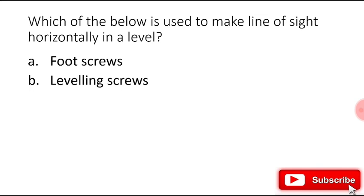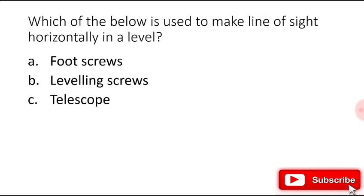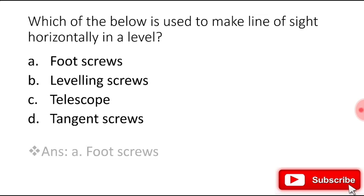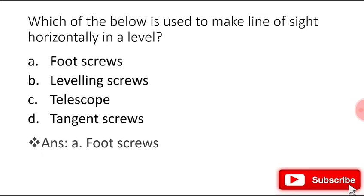Which of the below is used to make the line of sight horizontal in a level: foot screws, leveling screws, telescope, or tangent screws? The right answer is foot screws.